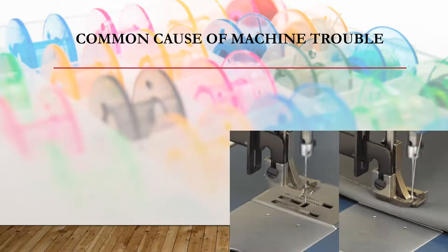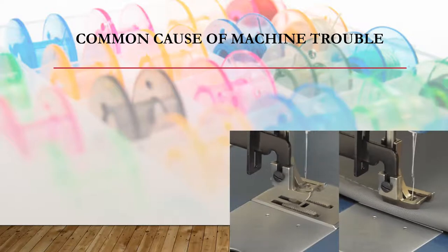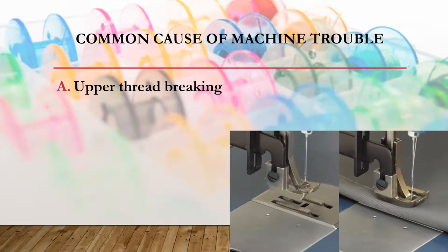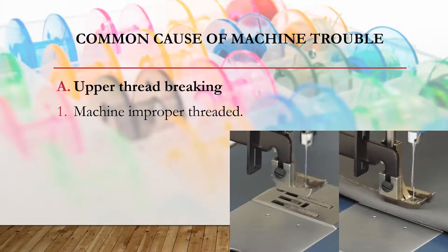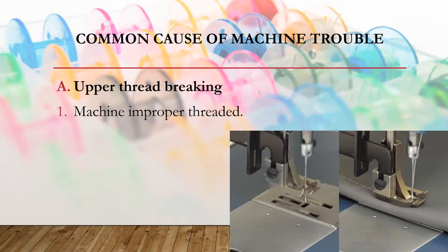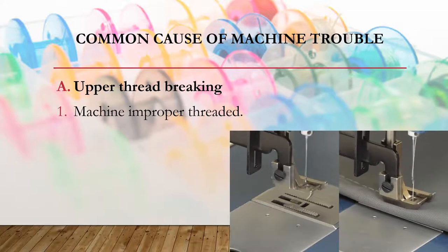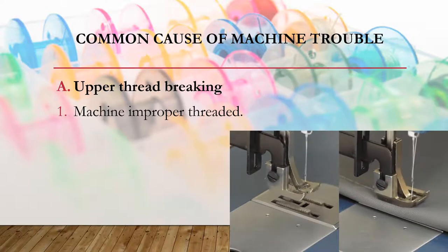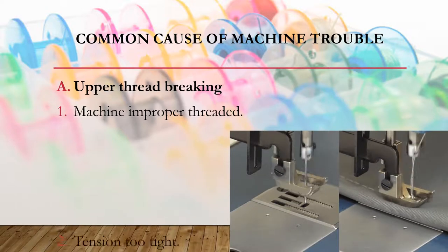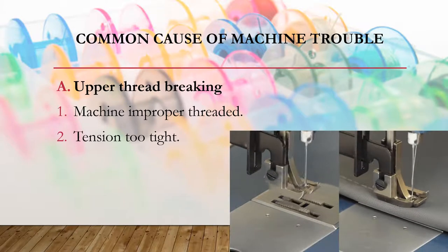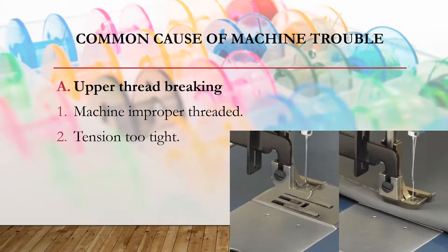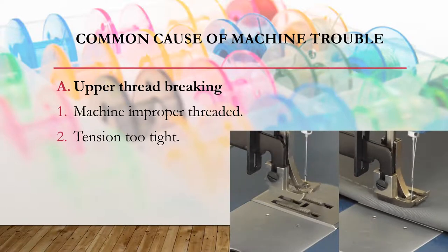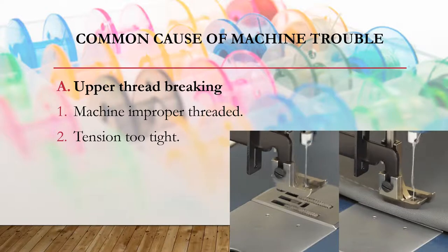The following are the common causes of sewing machine trouble. If you are experiencing upper thread breaking while sewing, your machine is not properly threaded. The remedy is to thread the sewing machine properly so that you can avoid upper thread breaking. Another cause is tension that is too tight; you should adjust the upper tension to avoid upper thread breaking.